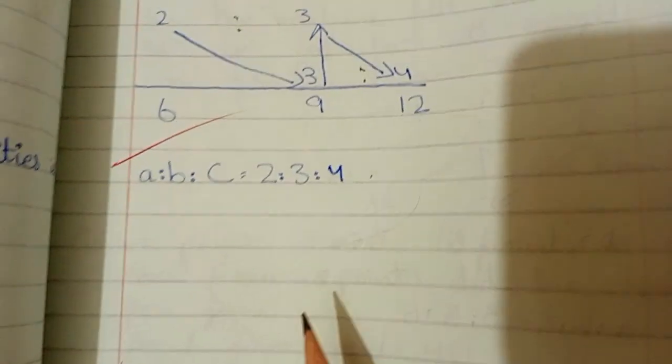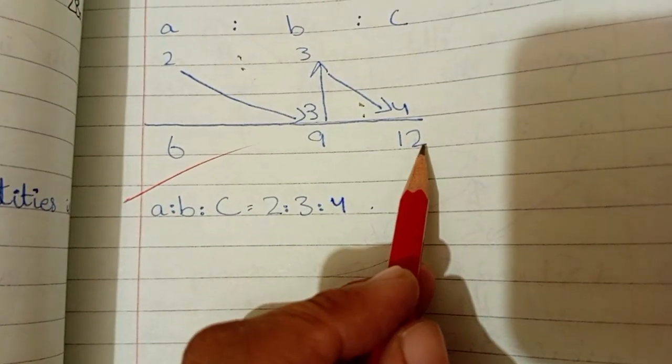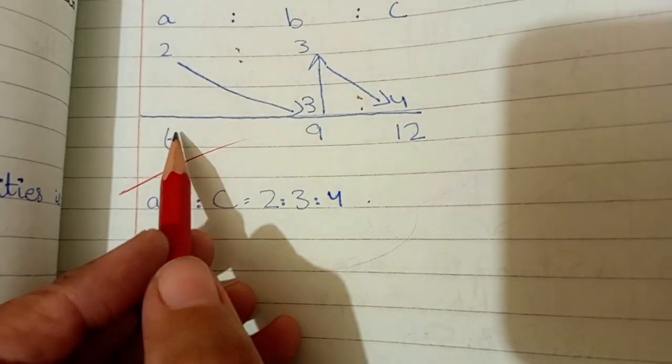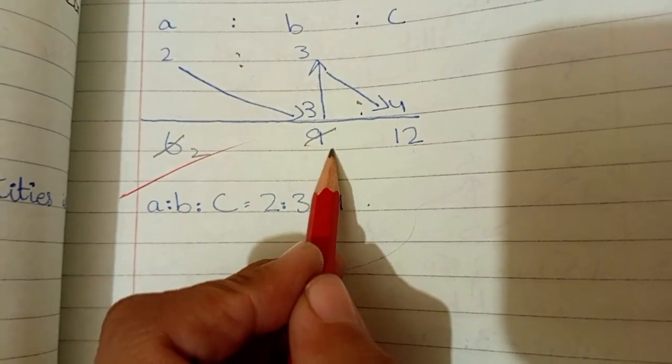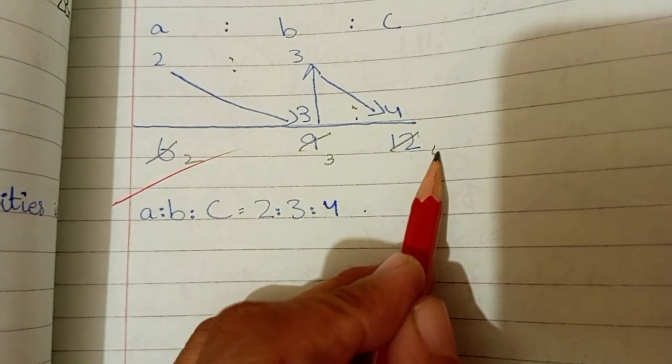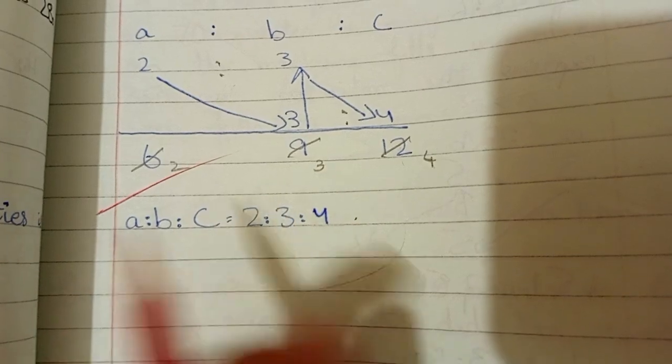پھر آگے چلتے ہیں تو ہمارا ریشو کیا نکلا 6 ratio 9 ratio 12. اب اس کو ہم cut کرتے ہیں کونسیٹیبل سے جار ہے 3. 2, 0, 6. 3, 3, 0, 9. 3, 4, 0, 12. یعنی یہاں کیا آ گیا ہے 2 ratio 3 ratio 4.